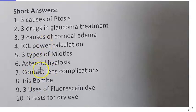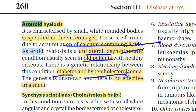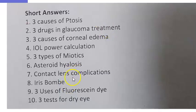Asteroid hyalosis: calcium-containing lipids in the vitreous. It is typically unilateral and asymptomatic, usually seen in elderly patients with diabetes or hypercholesterolemia. There is no effective treatment.